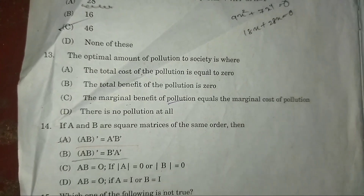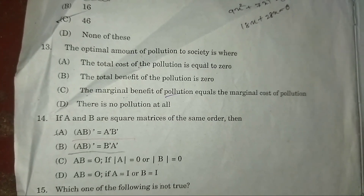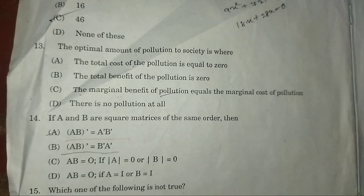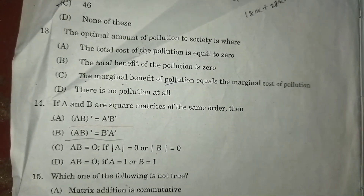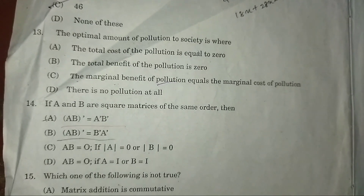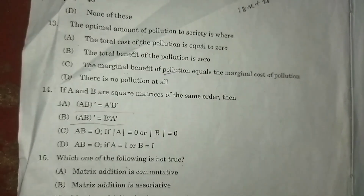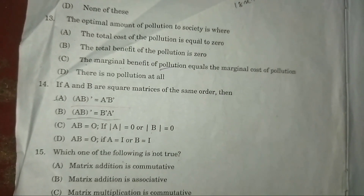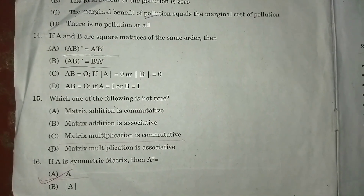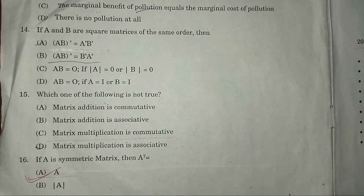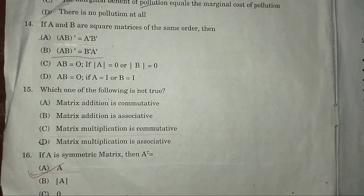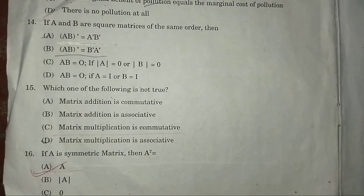Question 13: The optimal amount of pollution to a society is determined where — answer: C — the marginal benefit of pollution equals the marginal cost of pollution. Question 14: If A and B are square matrices of the same order, then answer: (AB)' = B'A'.